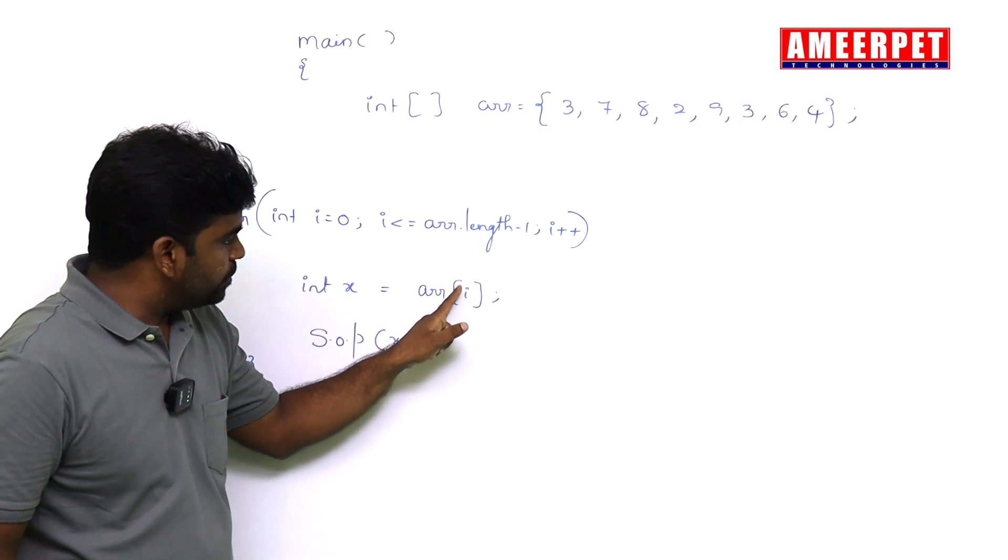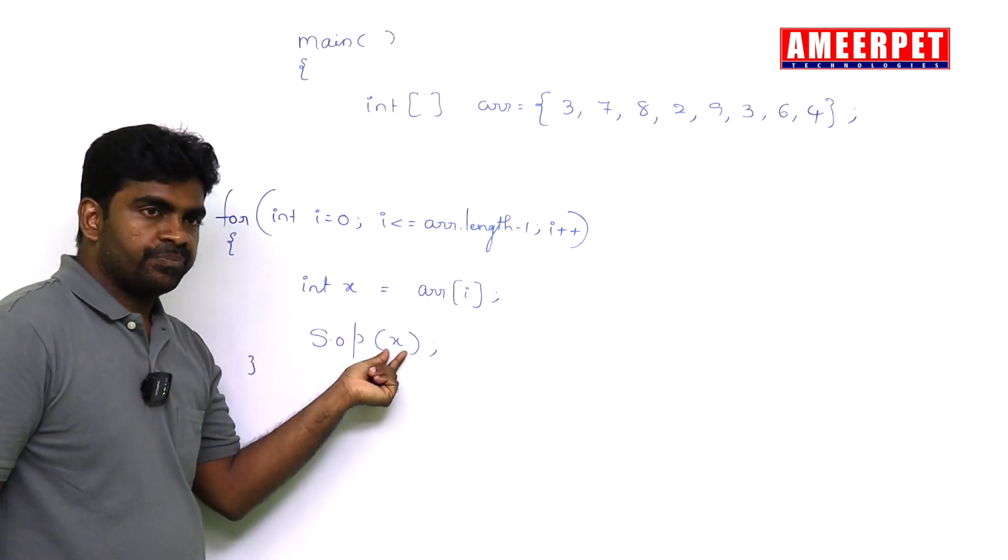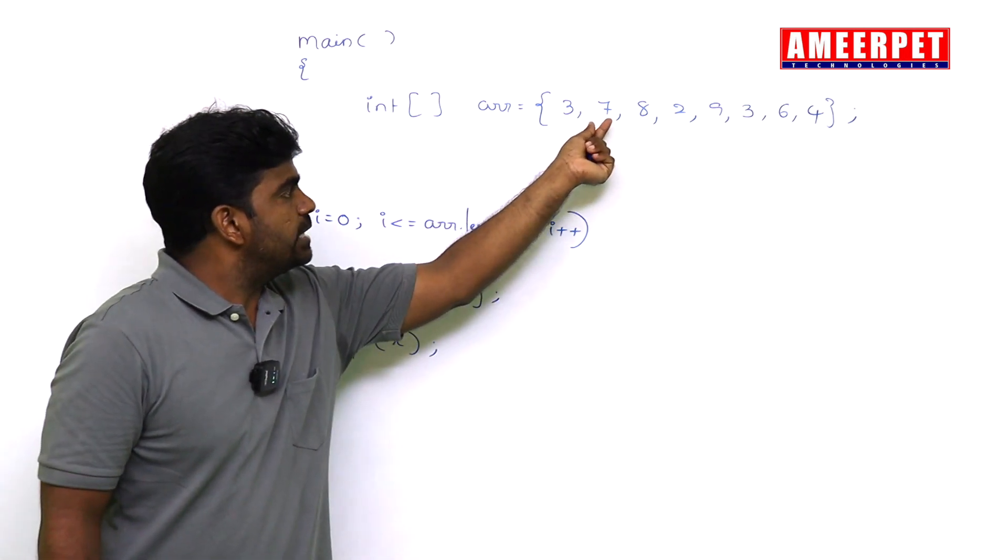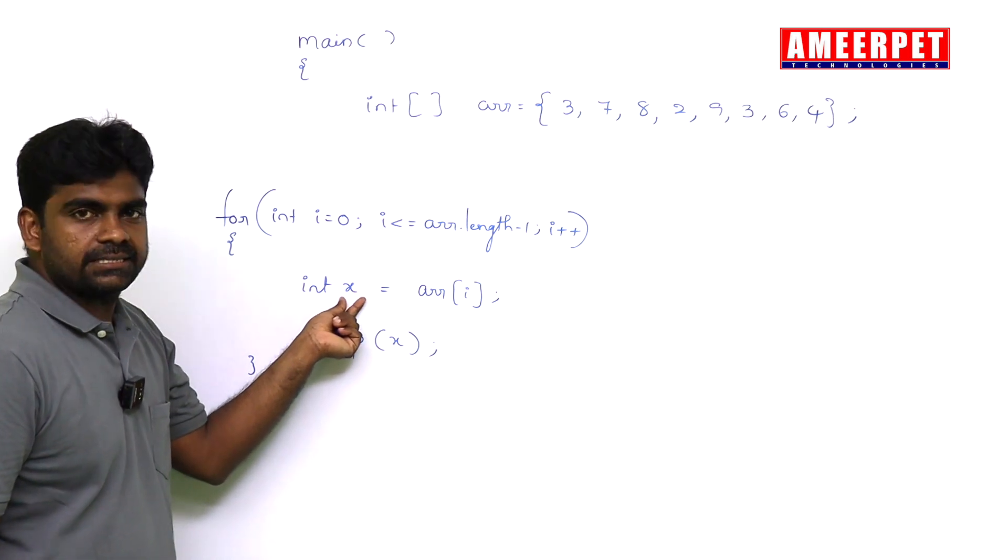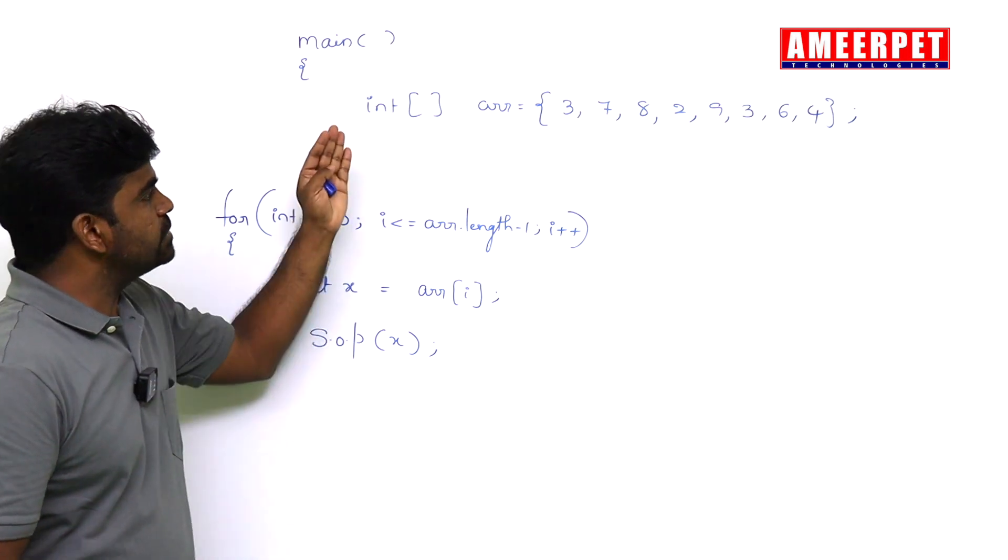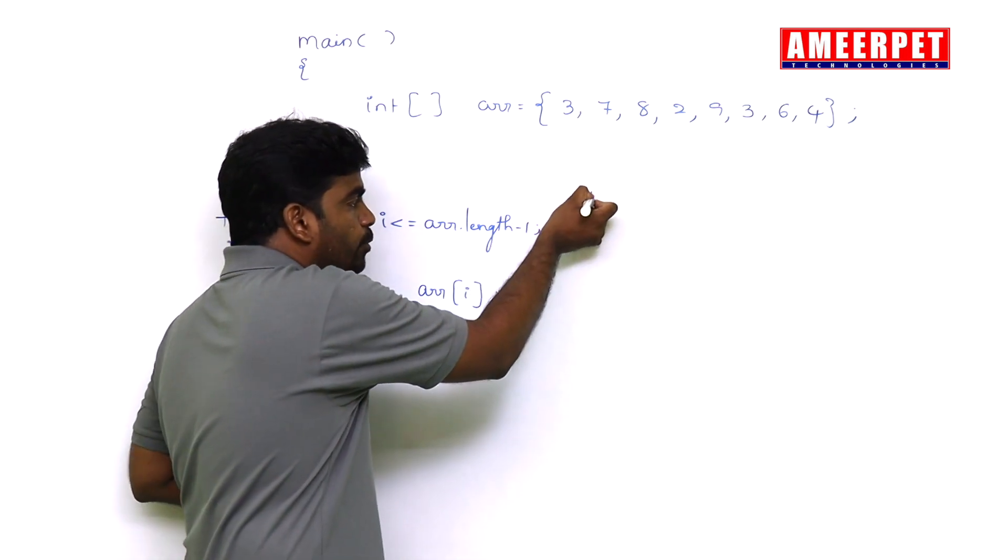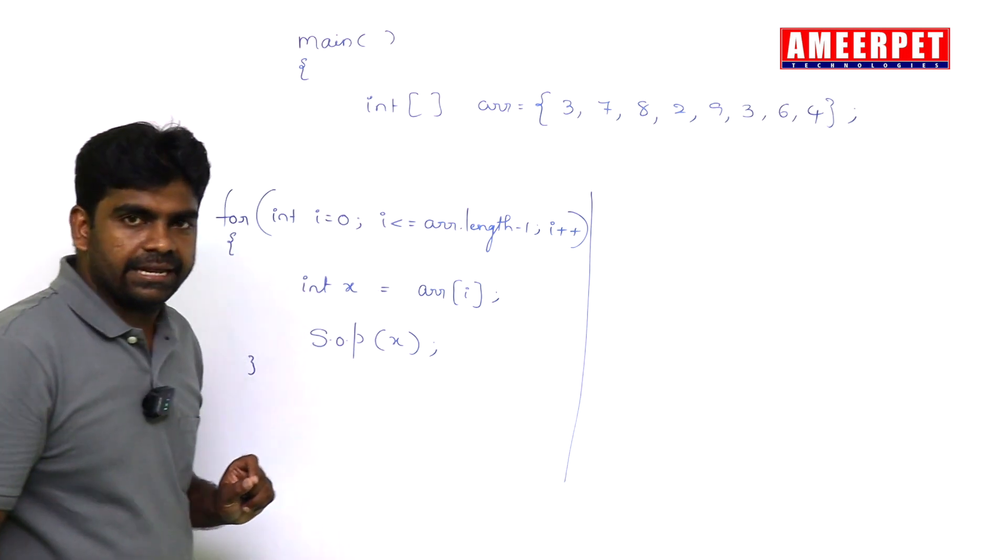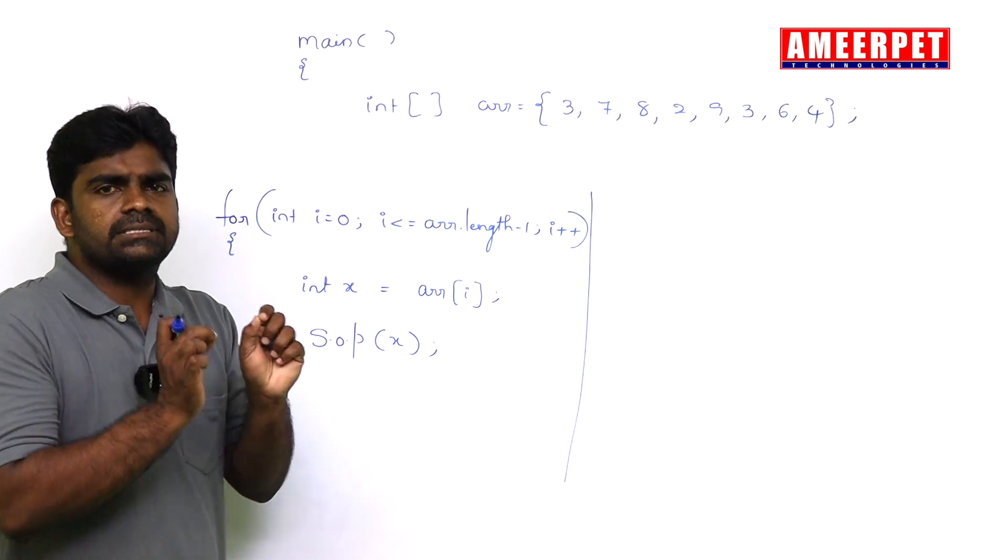So first what is i value? 0. So here 0th location element is 3. The 3 will come and store into this x, printing that 3. Next i value increases, that second location element is 7. That 7 will come and store into this x, 7 will print. All elements will print from start to end.